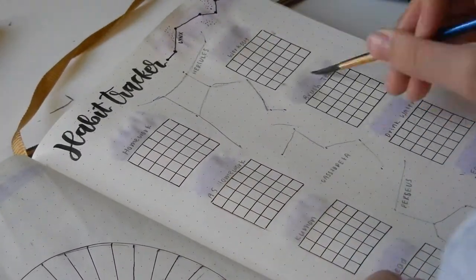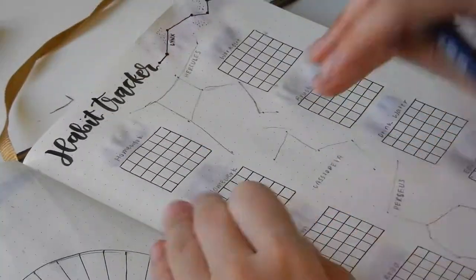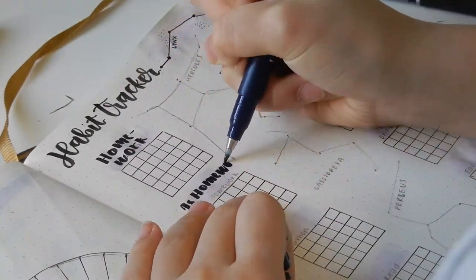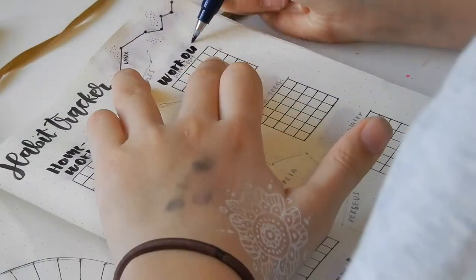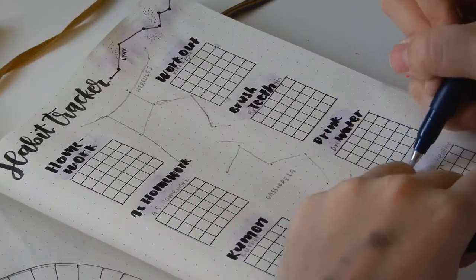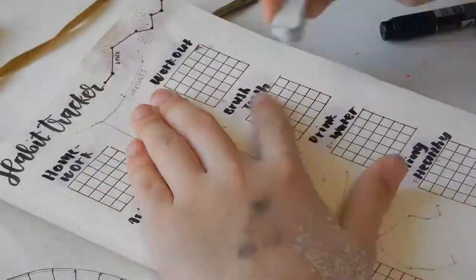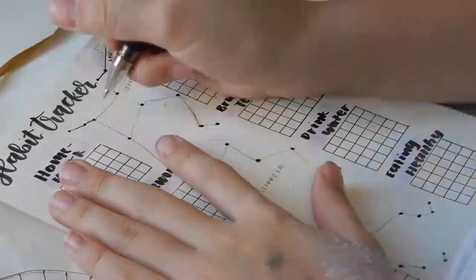I am using my Tombow Fudenosuke brush pen to add in a wash of the background for my titles. And here I am just using my Tombow Fudenosuke brush pen to add in my titles for each of my habits.